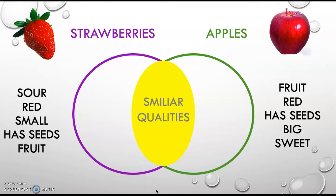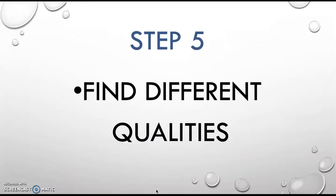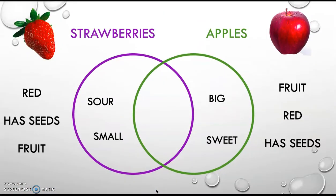Step five, now you're gonna find different qualities. Strawberries are sour and small, smaller than apples. And apples are big, bigger than strawberries, and apples are sweet, right?